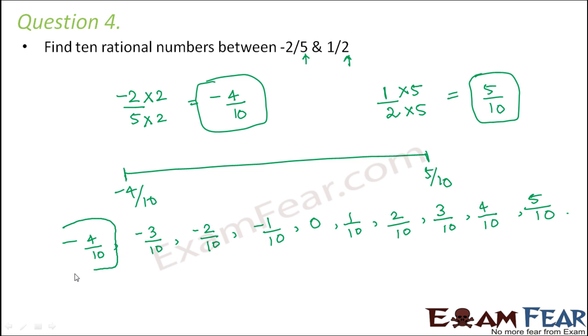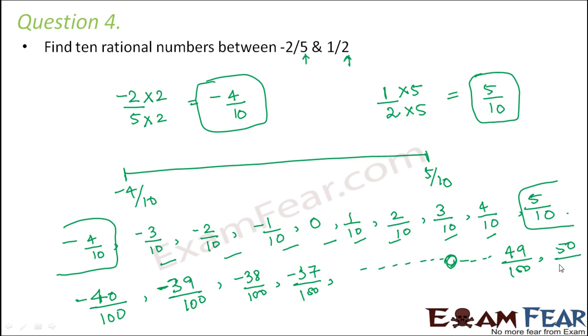So you see between -4/10 and 5/10, you could find 1, 2, 3, 4, 5, 6, 7, 8. So 8 rational numbers we already formed but we needed 10. So for that what we can do: -4/10 can be written as -40/100. So therefore anything that comes in between these, that is -39/100, -38/100, -37/100. So you continue like this till you reach 0 and then you cross 0 and you finally reach 49/100 and then 50/100. So you leave these two, in between these two you have so many numbers. So just pick any two out of these and that's how you get 10 rational numbers between -2/5 and 1/2.